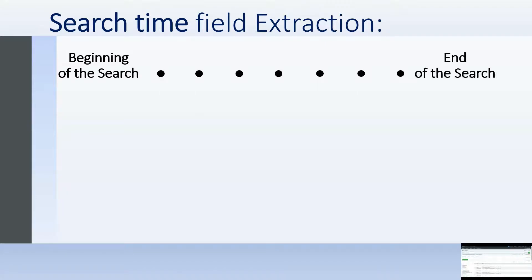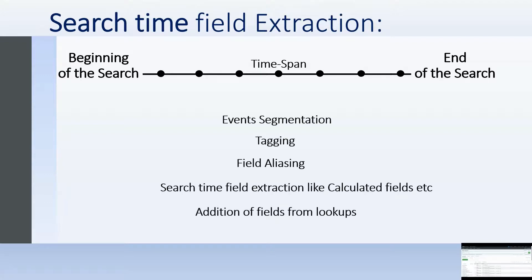Now let's look at search time field extraction. This is the time span from when you begin a search to when Splunk ends the search. The time taken between these two points is called search time field extraction. The following processes take place during search time: segmentation, tagging, field analysis, and support for calculated fields, among others.